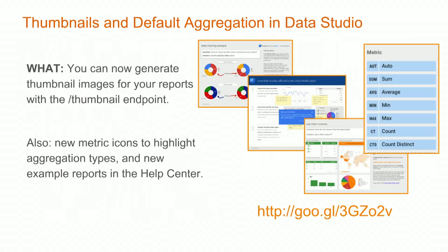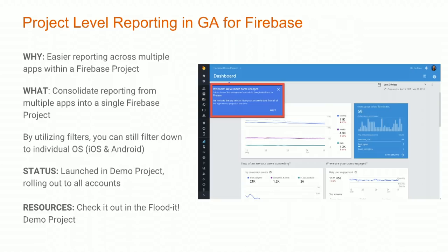Finally, we have thumbnails and default aggregation in Data Studio. You can now generate thumbnail images for your reports by adding /thumbnail to the end of any URL where you're going to share this. For example, if you want to tweet out a new dashboard, you can add /thumbnail to the URL and it will embed that thumbnail right in your tweet. We also have some new metric icons for aggregation types and new example reports in our help center.